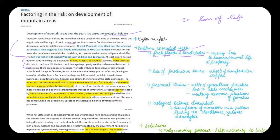The toll was higher in Himachal Pradesh with 21 killed and 12 injured; at least six are missing due to the chaos following the downpour. Mandi, Kangra, and Chamba were the worst affected districts in the state. While death and damage to property are the surface manifestations of these rains, there is a range of secondary effects with long-term downstream impact. The first point you can write is: loss of life and property.